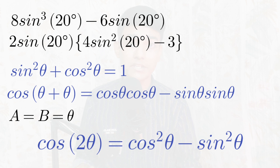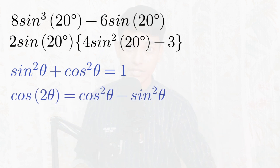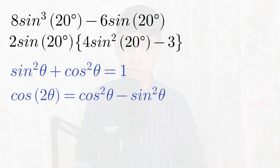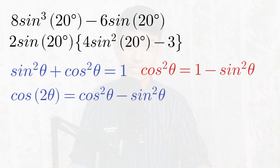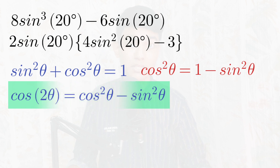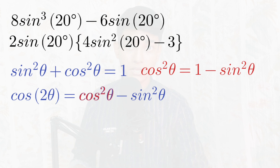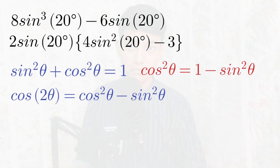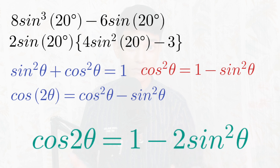So we have cos(2θ) = cos²θ − sin²θ. From the universal identity sin²θ + cos²θ = 1, we get cos²θ = 1 − sin²θ. Substituting this into the cos(2θ) expression, we replace cos²θ with (1 − sin²θ), giving cos(2θ) = 1 − 2sin²θ. That's the particular relation we were looking for.